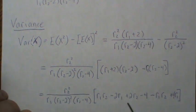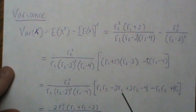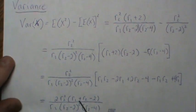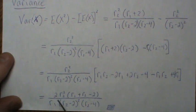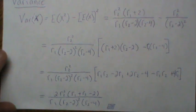Then we simplify. The r2s cancel, and there's going to be a 2 common. We can factor that out. The r1s combine, and we're left with this. And that is the variance of an F distribution.